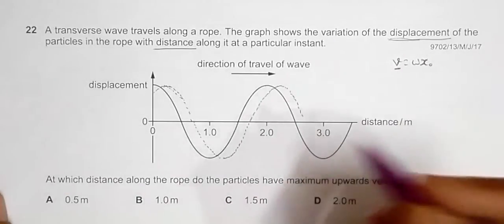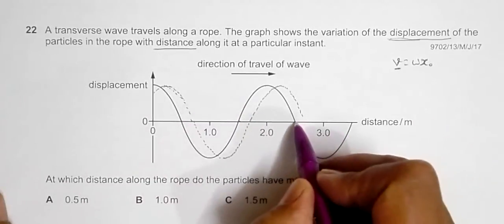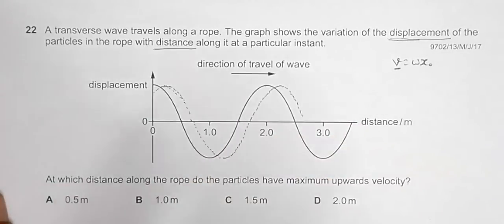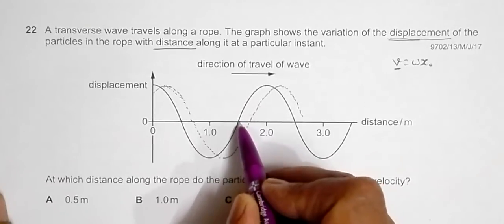So here max velocity can happen here, max velocity can happen here, and here as well as here. So if you look at this point, after some time this particle has to come here, after a moment it has to come here.